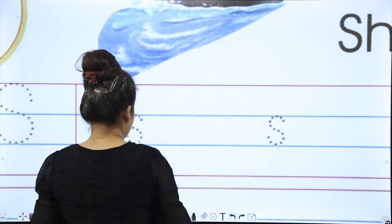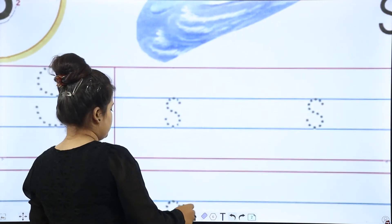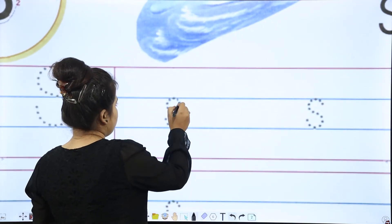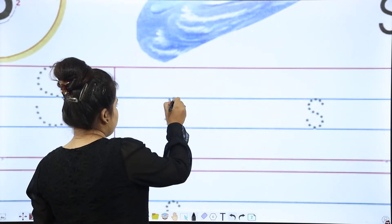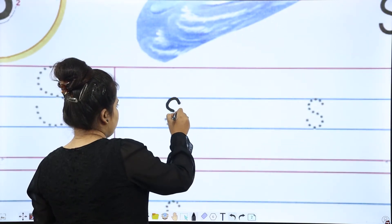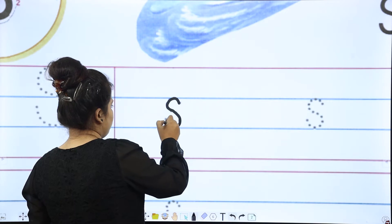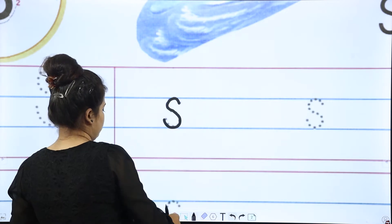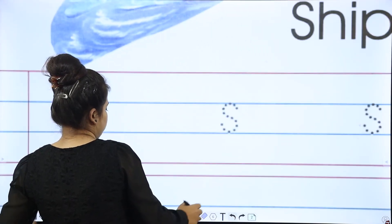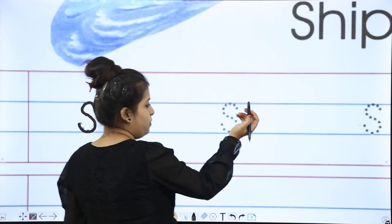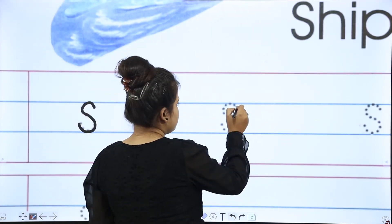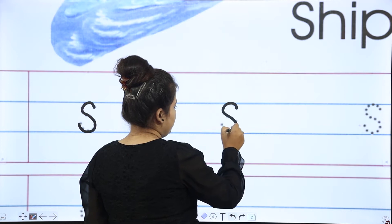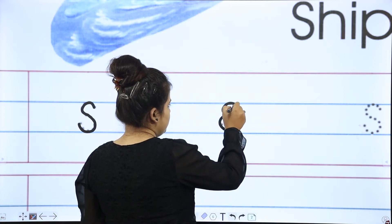So let's start with the tracing. What do you want to do — big S or small one? How do we make it? Like a complete 8.